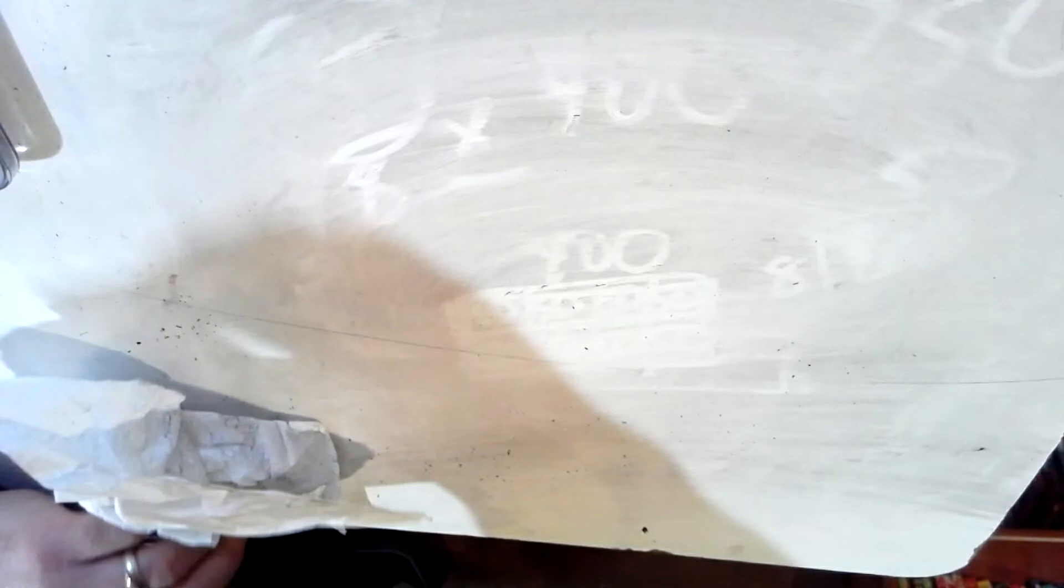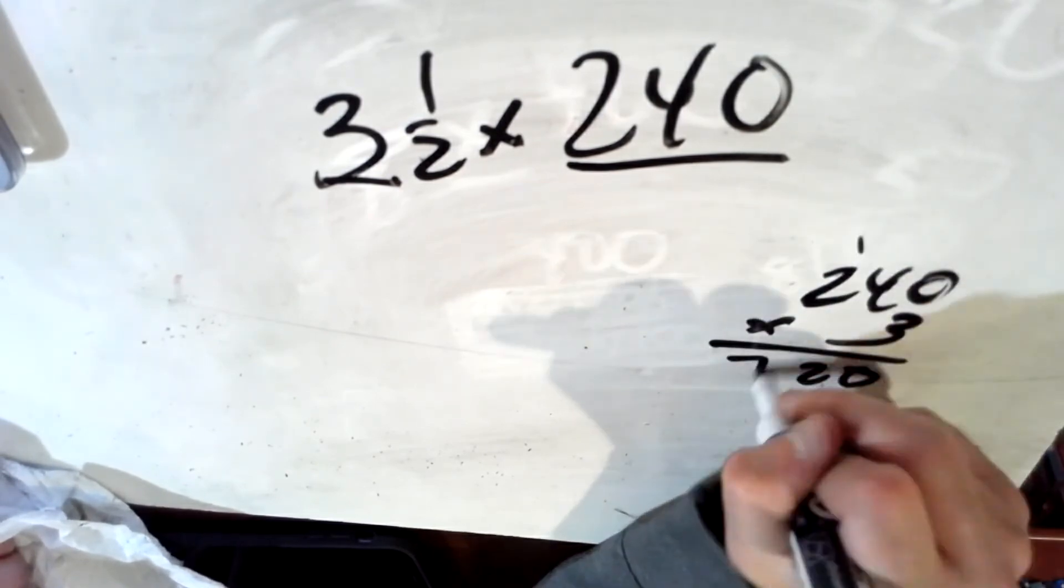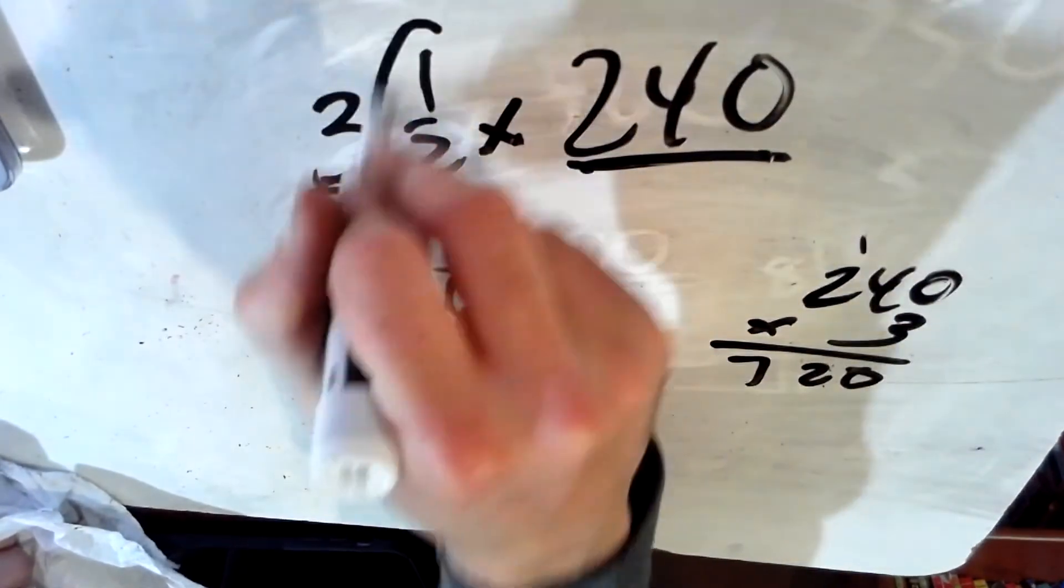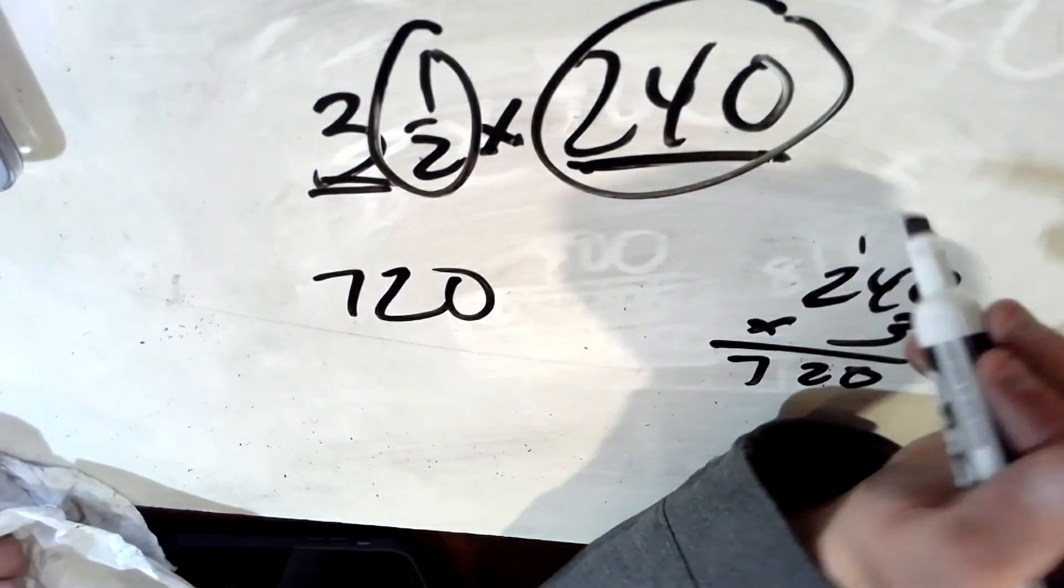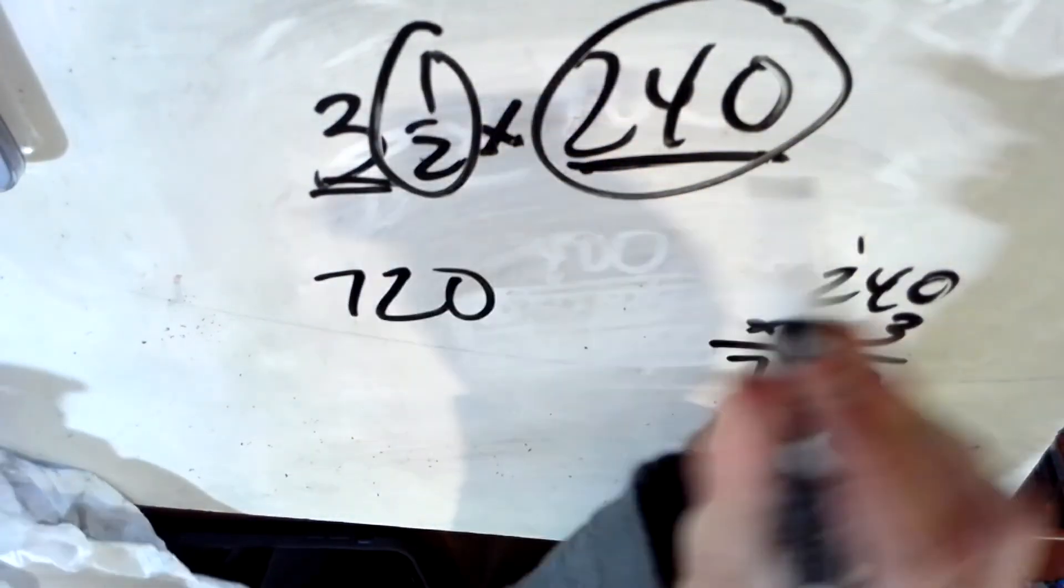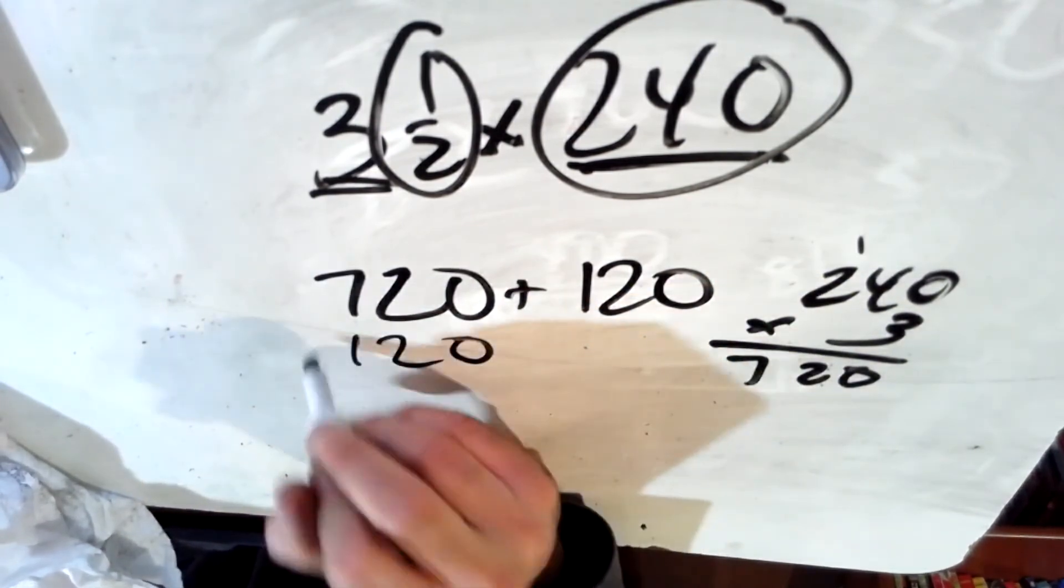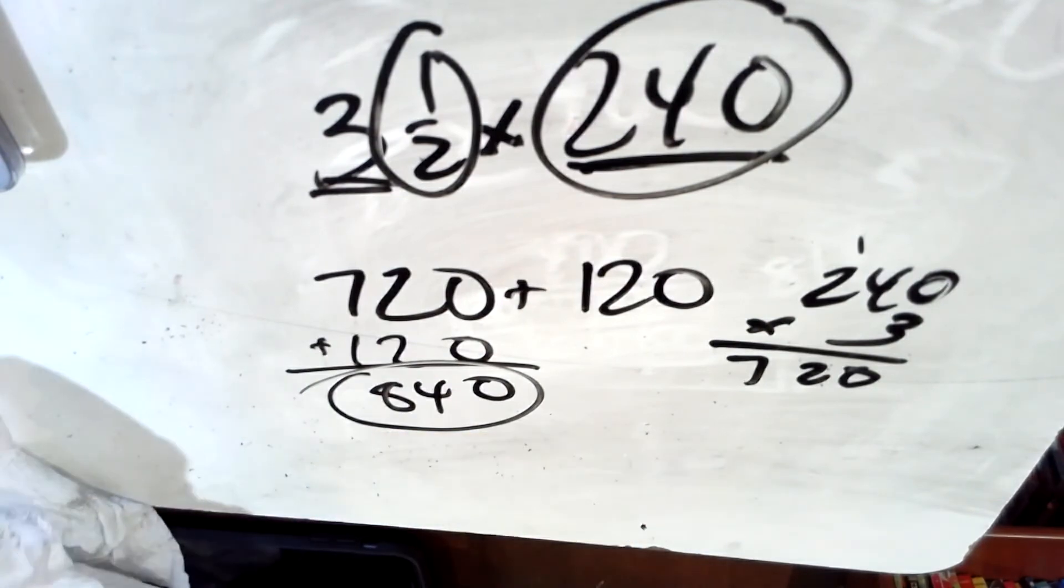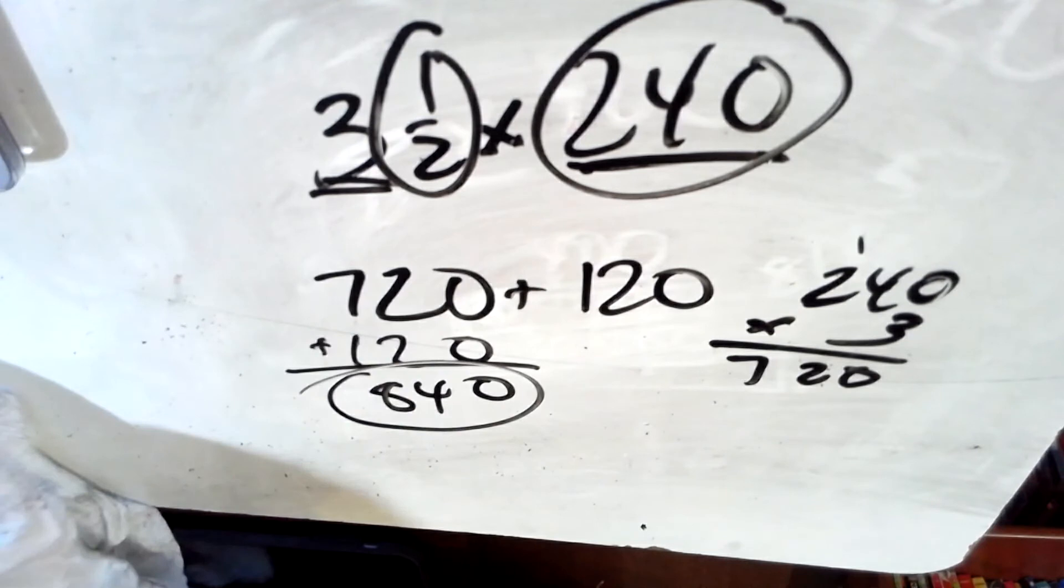Let's try another one. And this one looks kind of similar to a 10-minute math we've done recently. 3 and a half times 240. Well, we could say 240 times 3 is 720. And then half of 240. We're doing 3 times 240 and then 1 half times 240. 1 half of 240 is 120. Put them together and you get 840.